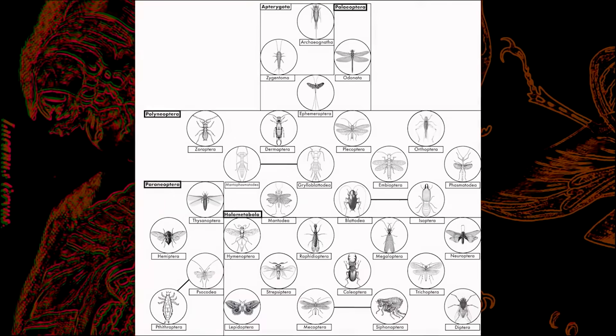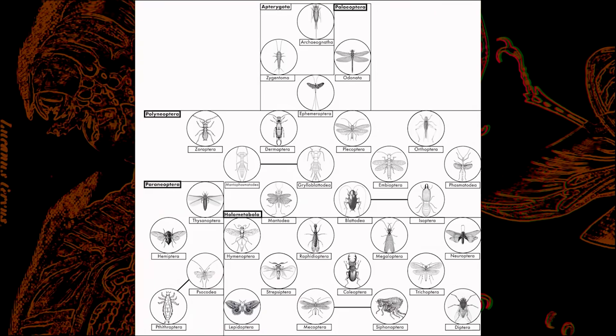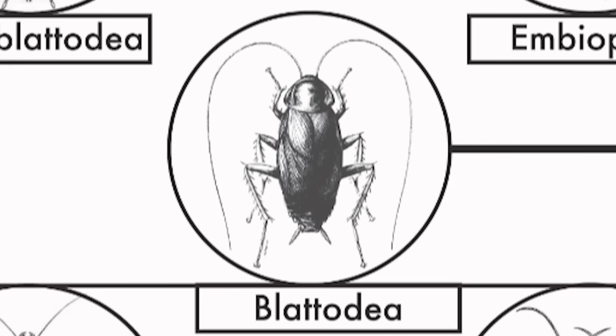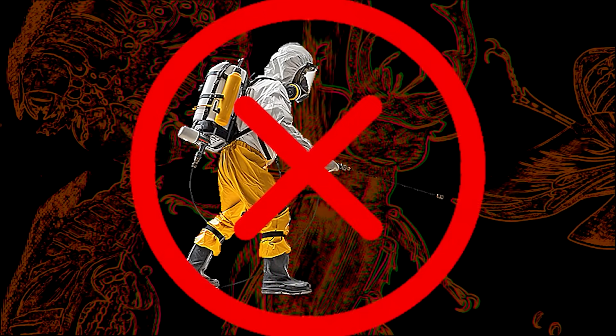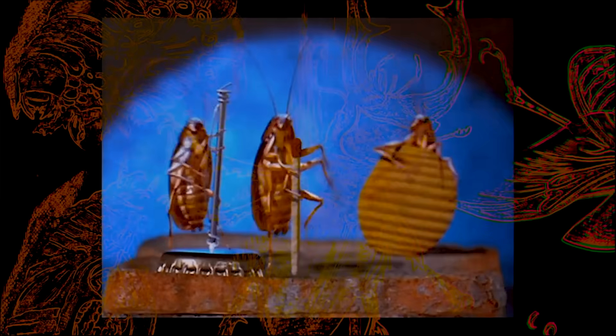This is the fifth video in a 30-part series giving an ecological overview of the insect orders. This video will be looking at the order Blattodea, commonly known as cockroaches. This video is not about how to get rid of cockroaches, simply their lifestyle and ecology.